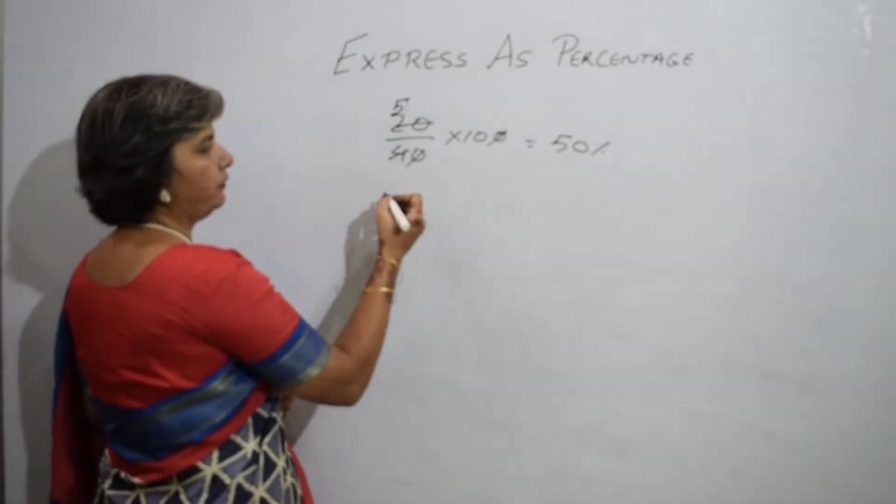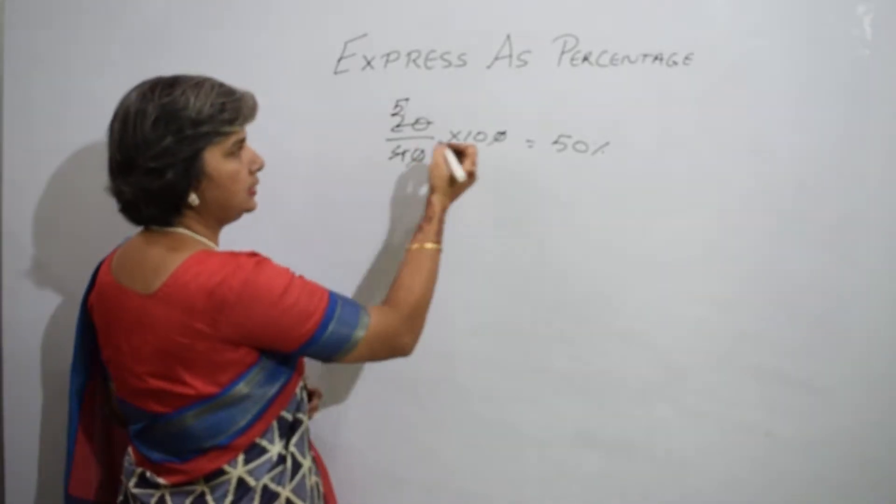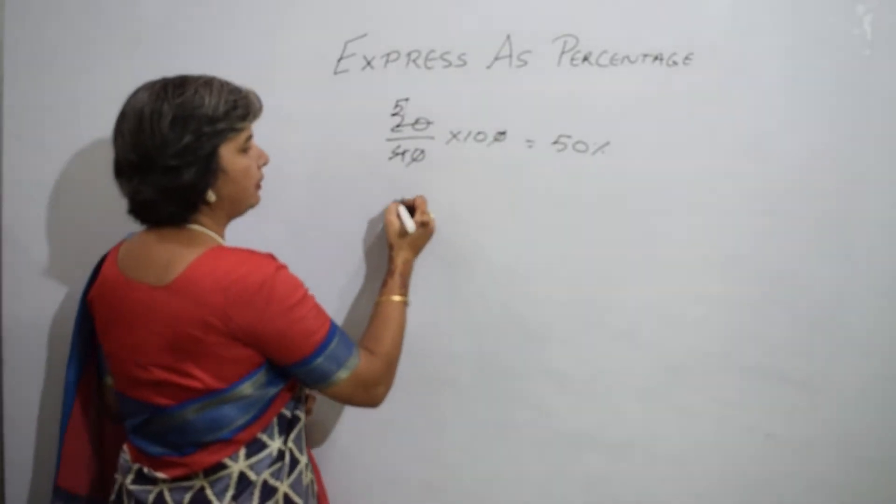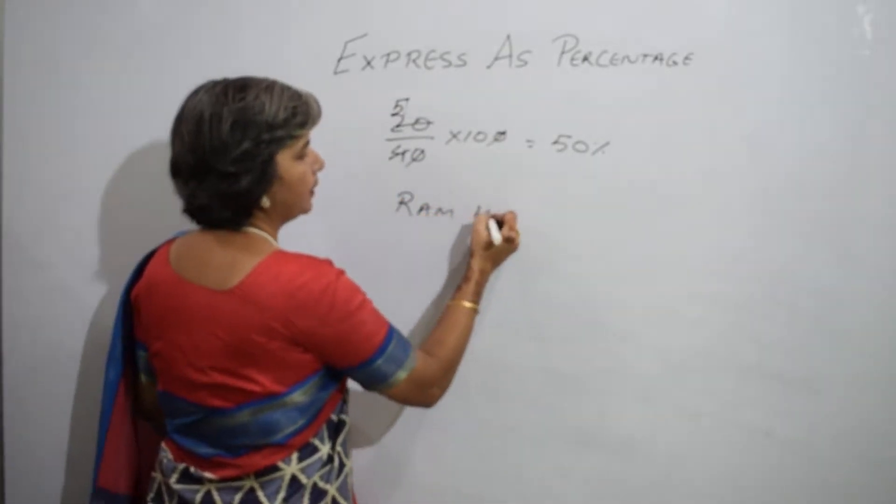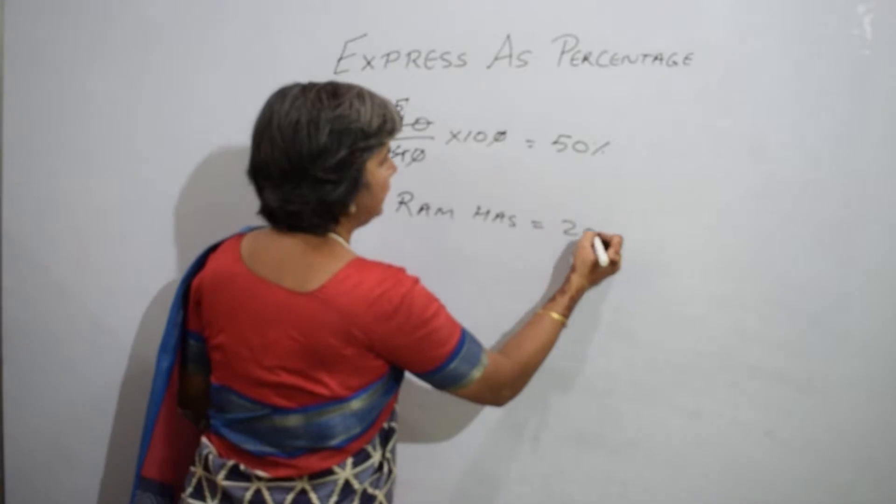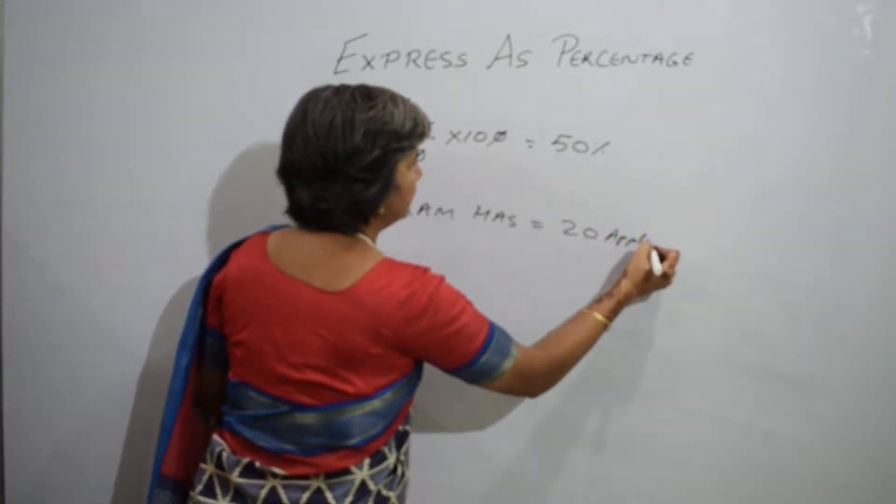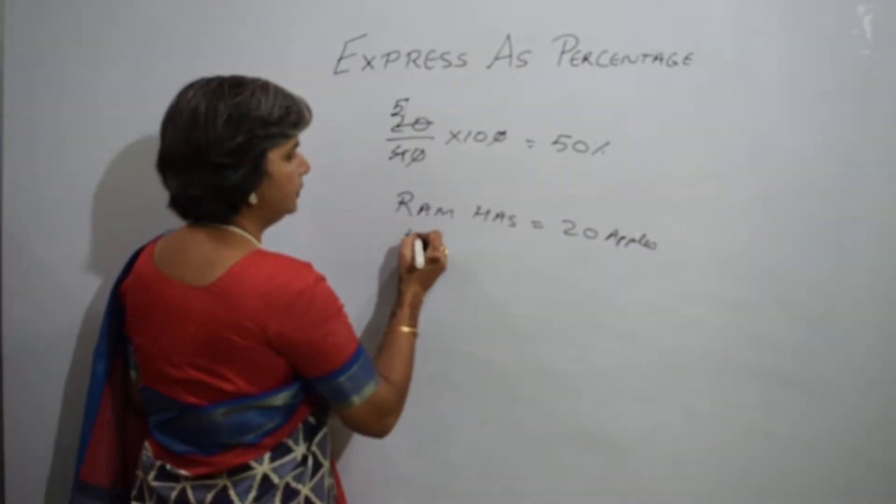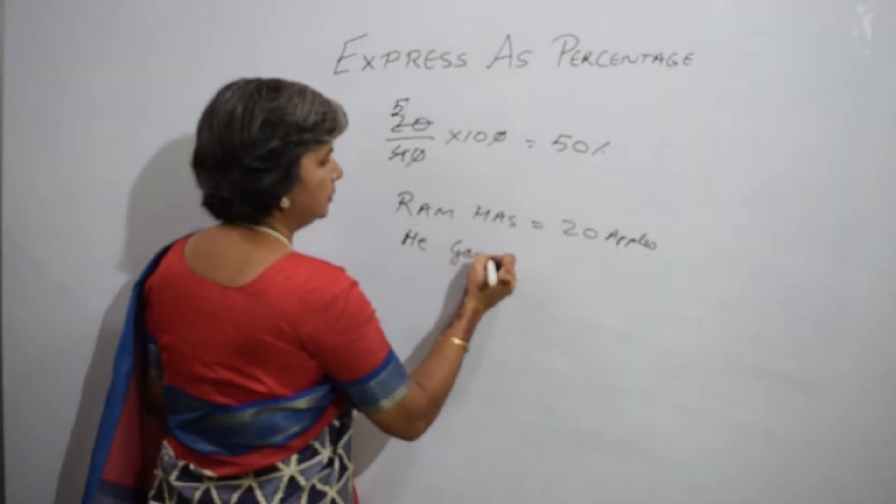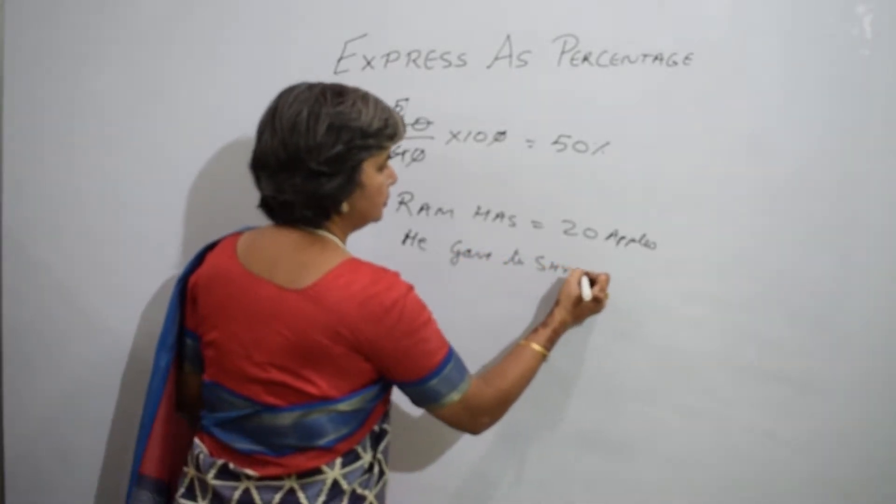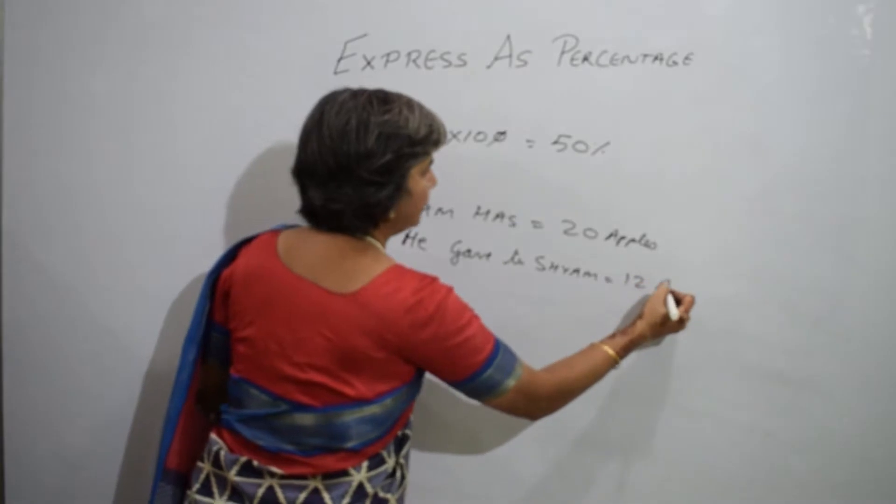To calculate this, I will find the percentage by using the same concept. Ram has 20 apples. He gave to Shyam 12 apples.